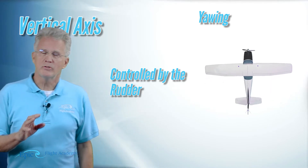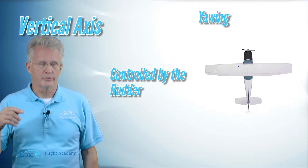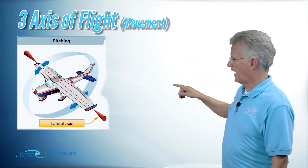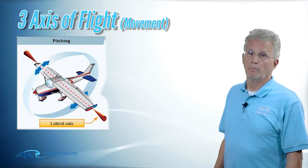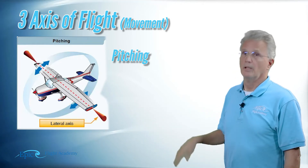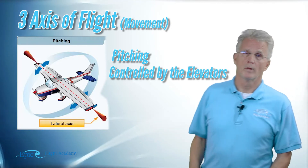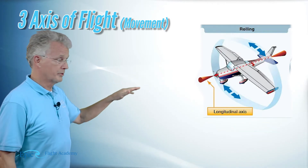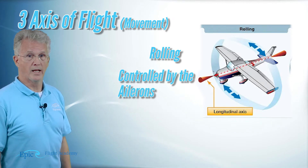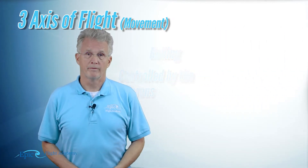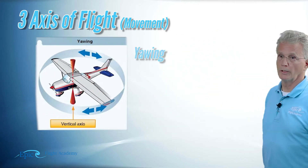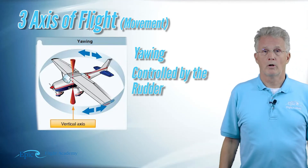These three axes are of critical importance — understand the axis, the motion, and the control. Lateral axis: wingtip to wingtip, the motion is pitching, and the flight control is the elevator. Longitudinal axis: nose to tail, the motion is rolling, and the flight control is the aileron. Vertical axis: vertical through the center of gravity, the motion is yawing, and the flight control is the rudder.